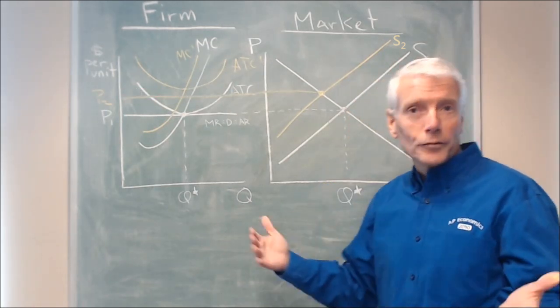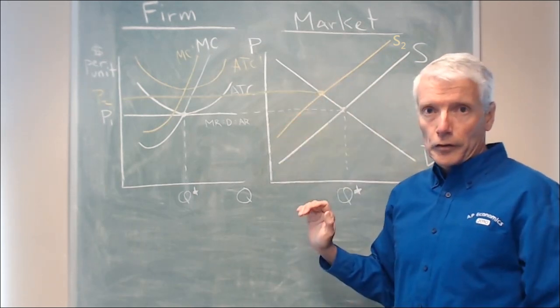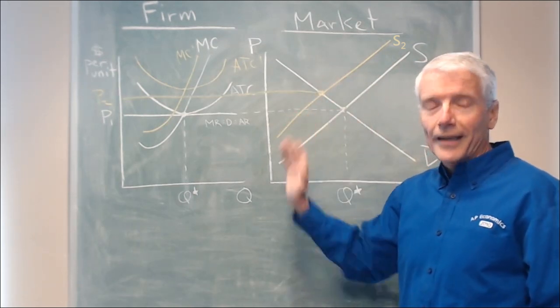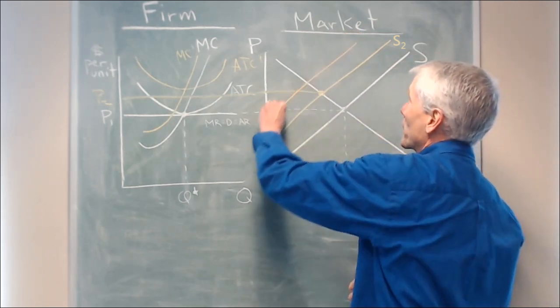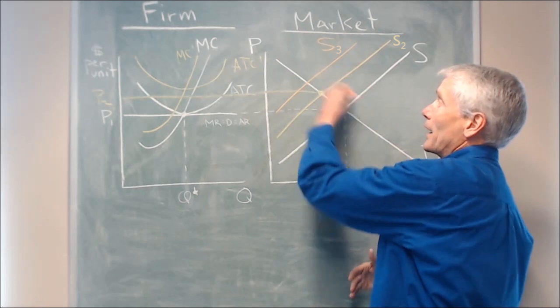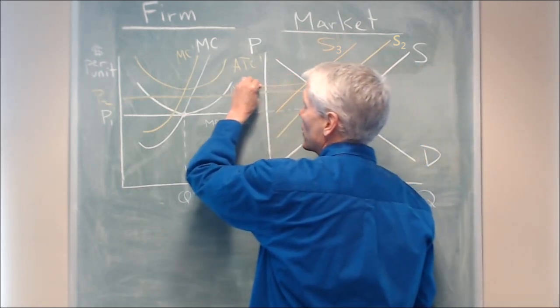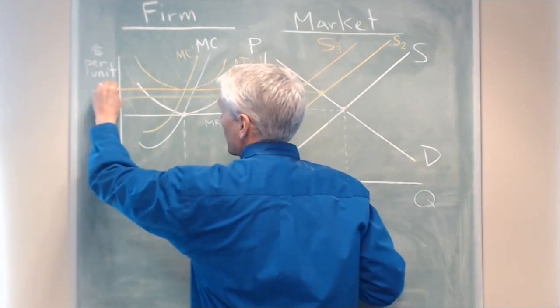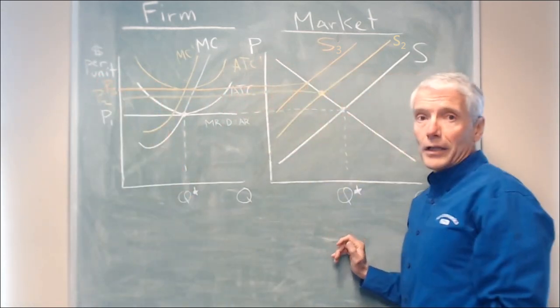In the long run firms exit. So we have a decrease in number of firms and a decrease in supply. And that continues until we reach a point like S3. That's our new supply curve. And at this new price P3 firms are making zero economic profit.